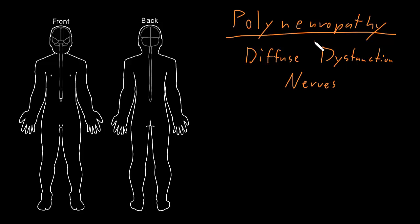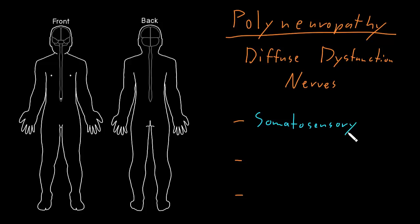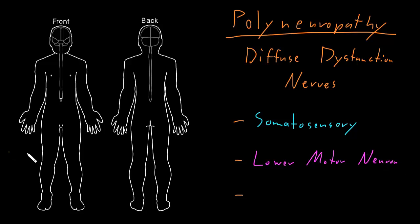Polyneuropathy syndromes may involve abnormalities of the three types of neurons that are in the nerves of the peripheral nervous system. There may be somatosensory abnormalities from involvement of the somatosensory neurons, lower motor neuron abnormalities from involvement of the lower motor neurons, and autonomic abnormalities from involvement of the autonomic neurons in the nerves.